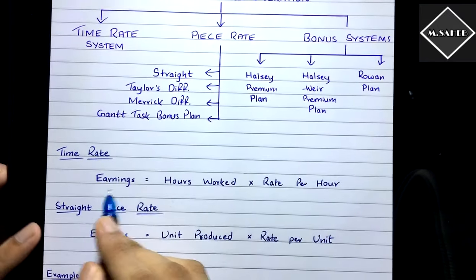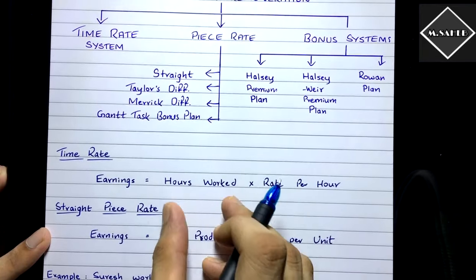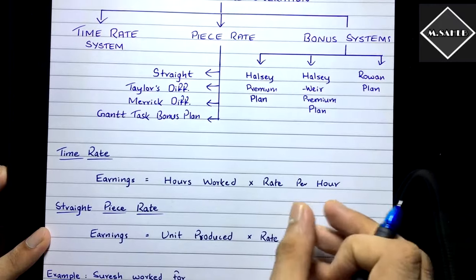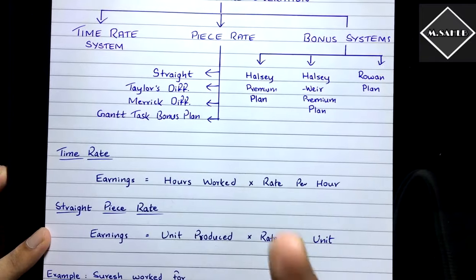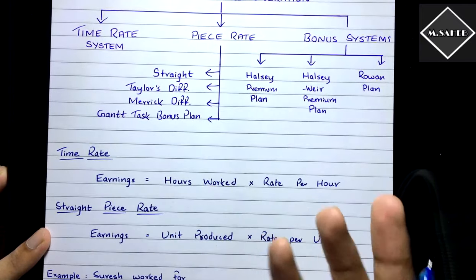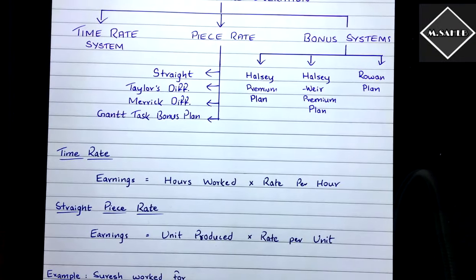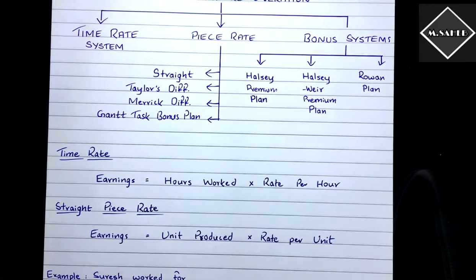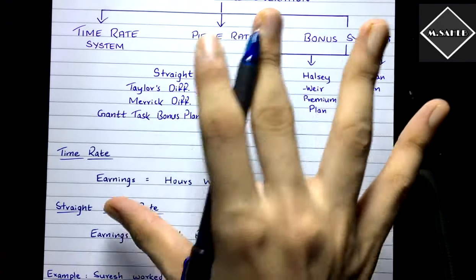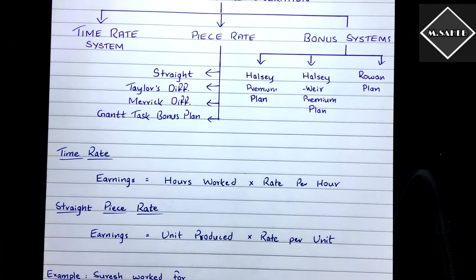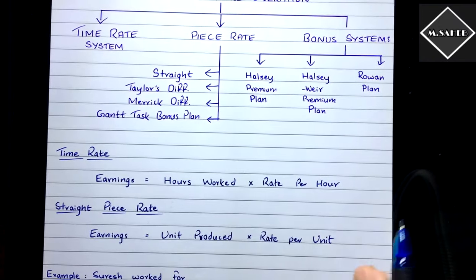The time rate system is very simple. Earnings = Hours Worked × Rate per Hour. However many hours a worker has worked, multiplied by the rate per hour, gives the earnings to be paid. For example, if a worker works 5 hours and the rate per hour is ₹100, then 5 × 100 = ₹500 is the earnings. The earning is based purely on the time basis — how many hours worked multiplied by the rate.